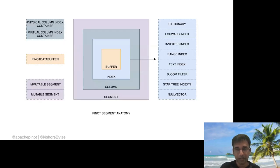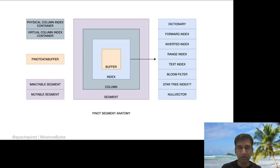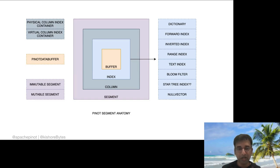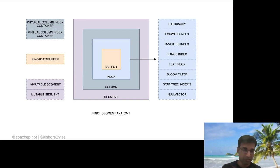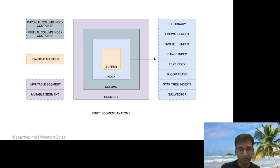Regarding segment anatomy, Pinot memory-maps everything and doesn't store anything directly in memory. The core is the raw data buffer, surrounded by indexing structures: dictionary encoding, forward index, inverted index, and range index, organized per column. Segments can be mutable — accepting new records with indexes updated on the fly — or immutable, created upfront and pushed into Pinot. Immutable segments are more efficient, and mutable segments periodically get converted into immutable ones.